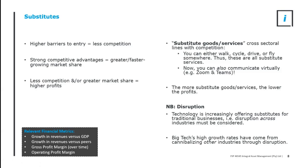But there are things called substitutes. Substitute goods or services cross sectoral lines with competition. You can either walk, cycle, drive, fly, Uber, or catch a taxi — there are multiple ways to move yourself from one location to another. Transport has many substitutes. And especially with the pandemic, technology is offering another substitute: you can have a Zoom meeting or a Teams meeting and don't need to actually drive there. If you're looking at the taxi industry and you miss the fact that the industry itself is competing with other industries through substitutes, you're missing the full picture.